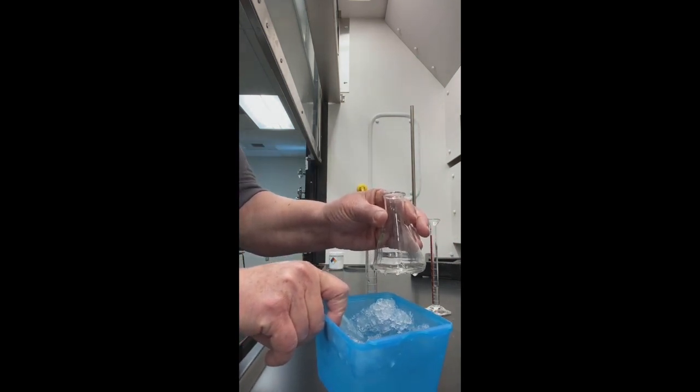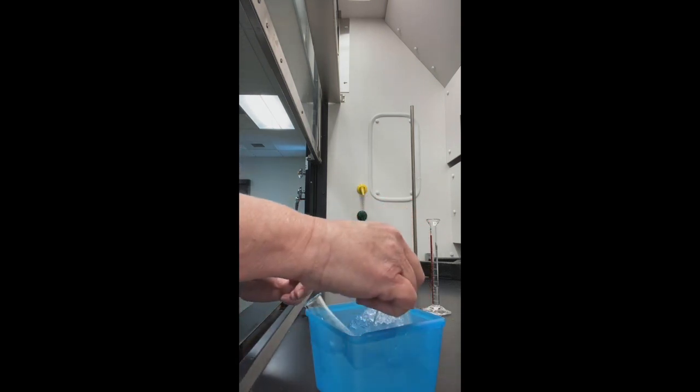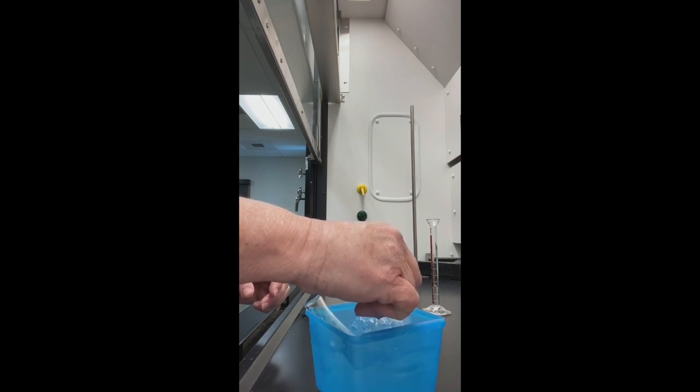The ice bath is about three-fourths ice and one-fourth water. That'll make it nice and cold. I'm going to swirl it just a little bit so it gets exposed and it can be nice and cold.